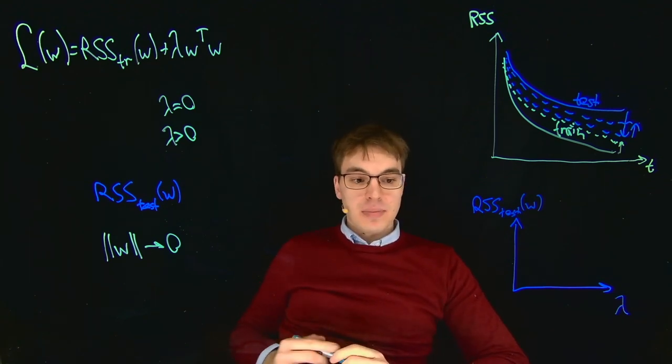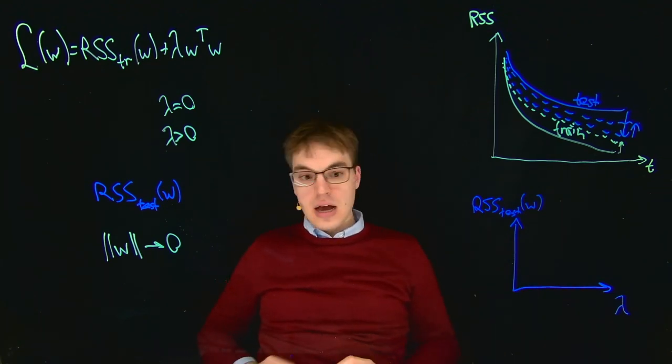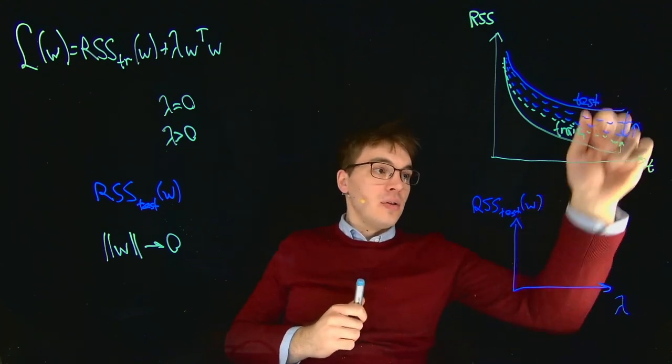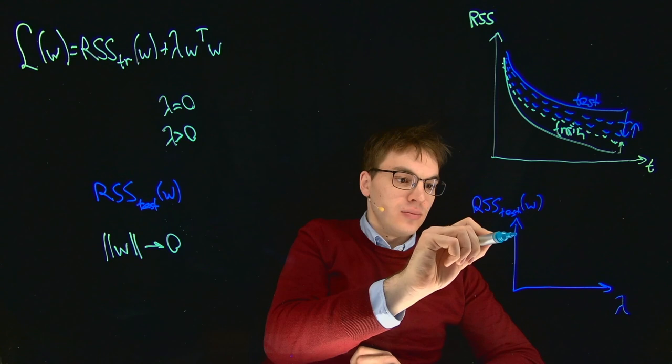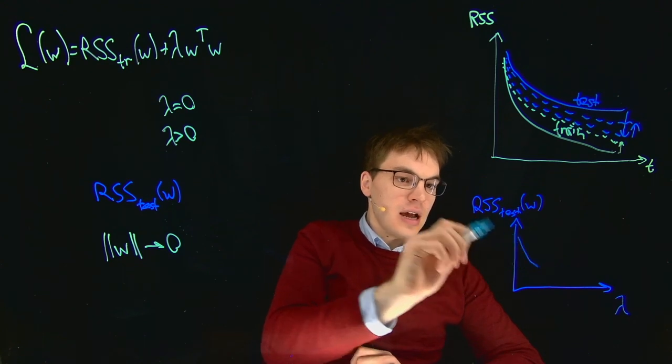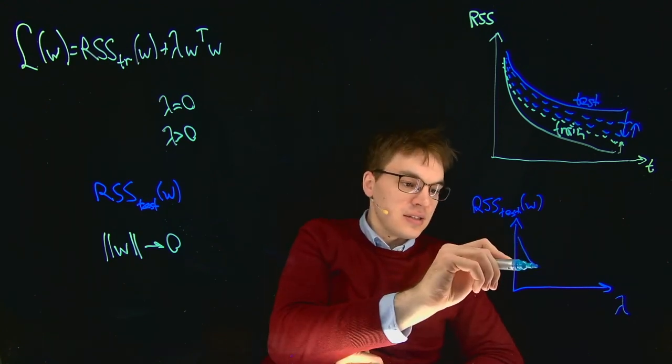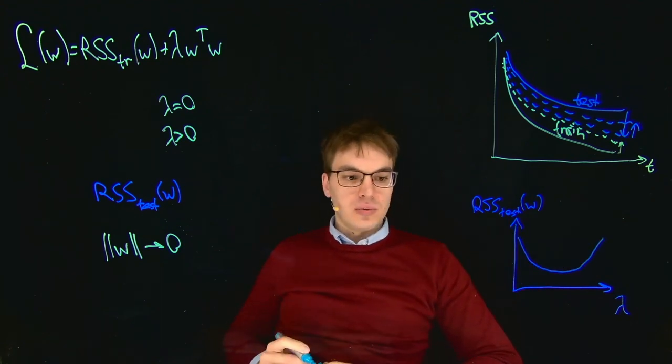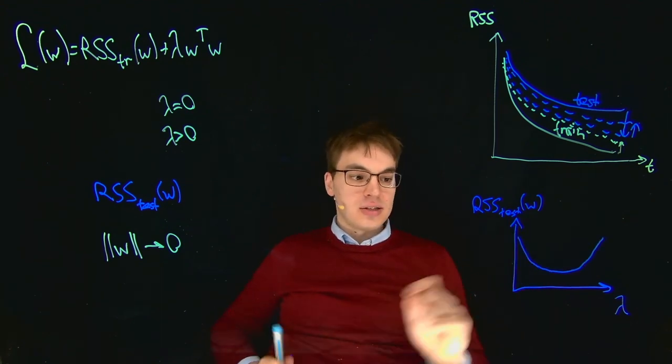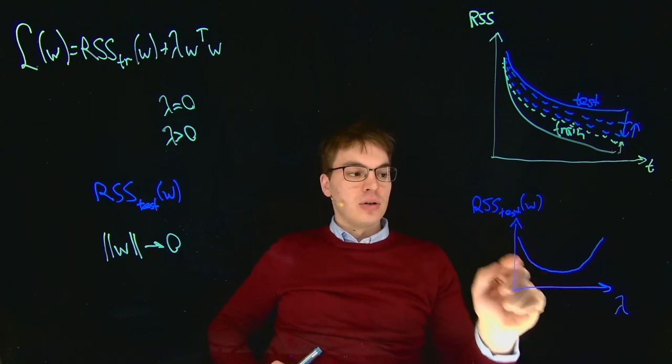Then we would see that by increasing our lambda at first, this is this down arrow that I drew here, we would get improvements in our RSS test. But at some point it would worsen again and we get this kind of U shape.